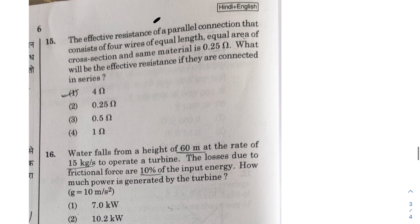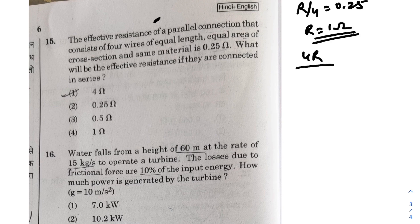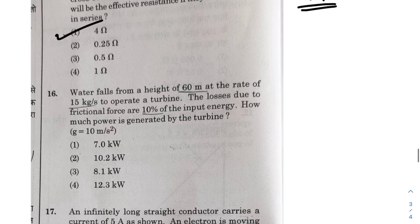Next, effective resistance of a parallel connection that consists of four wires of same length, same area, and same material is 0.25 ohm. So in parallel if you have an equivalent wire, so R by 4 is 0.25. So R becomes equal to 1 ohm. So if they are connected in series it would be 4R. 4R means it would be 4 ohm. So option 1, that's an easy one.